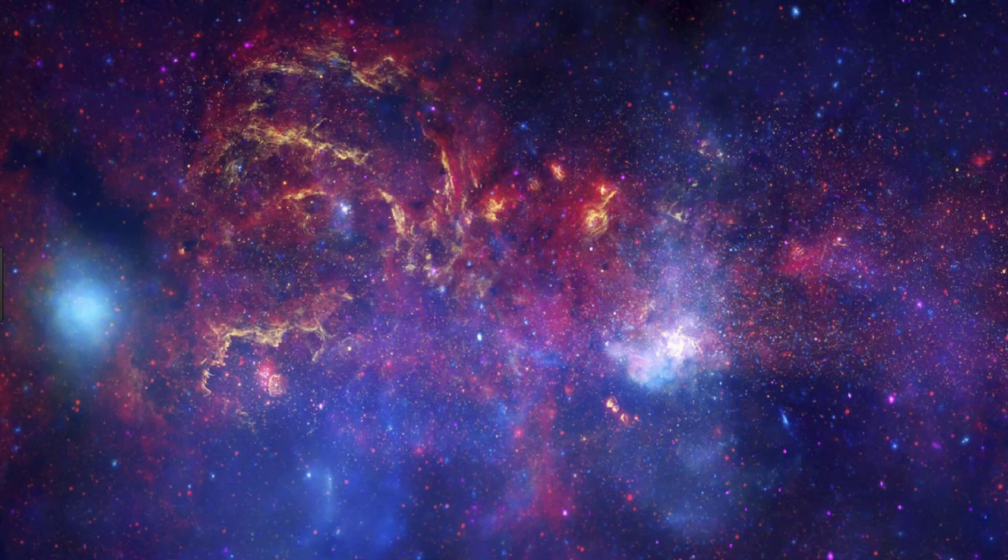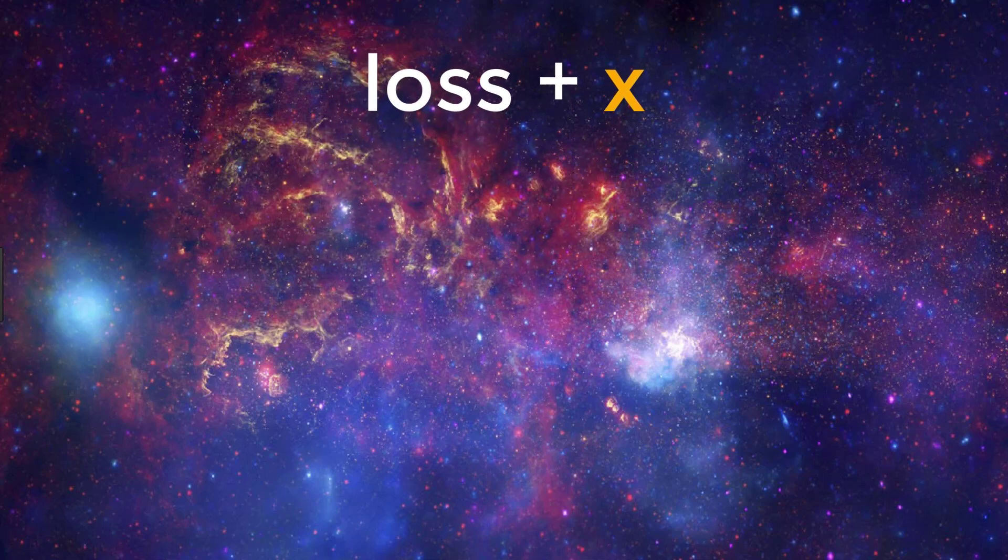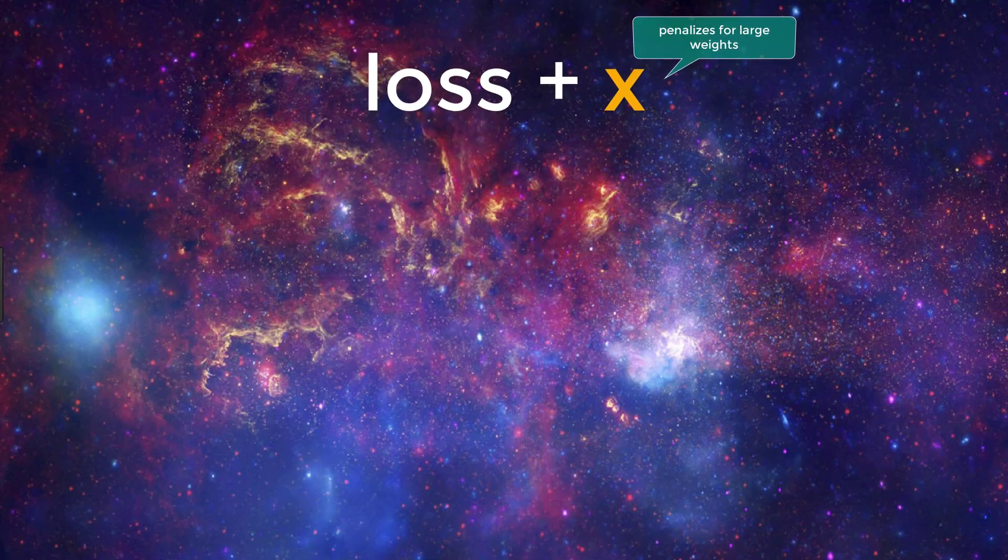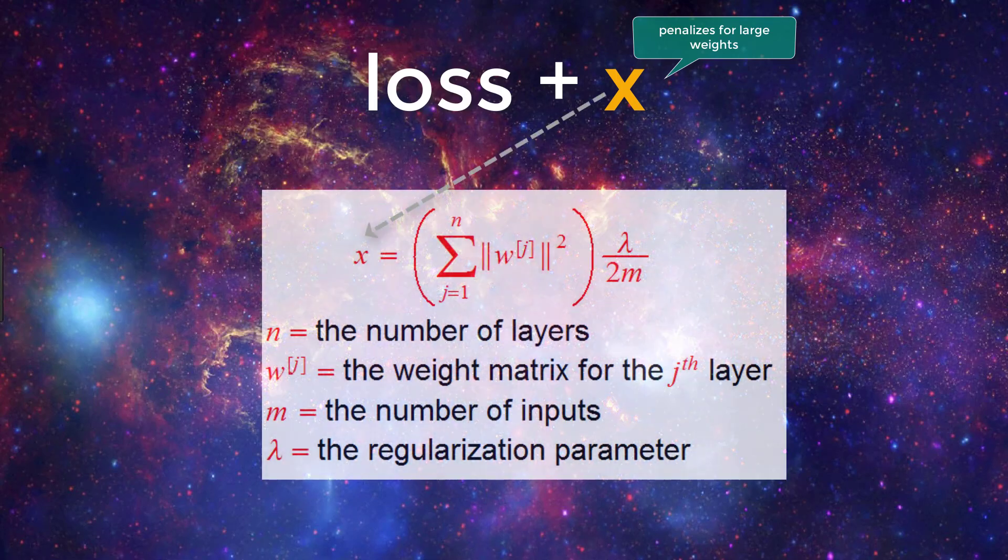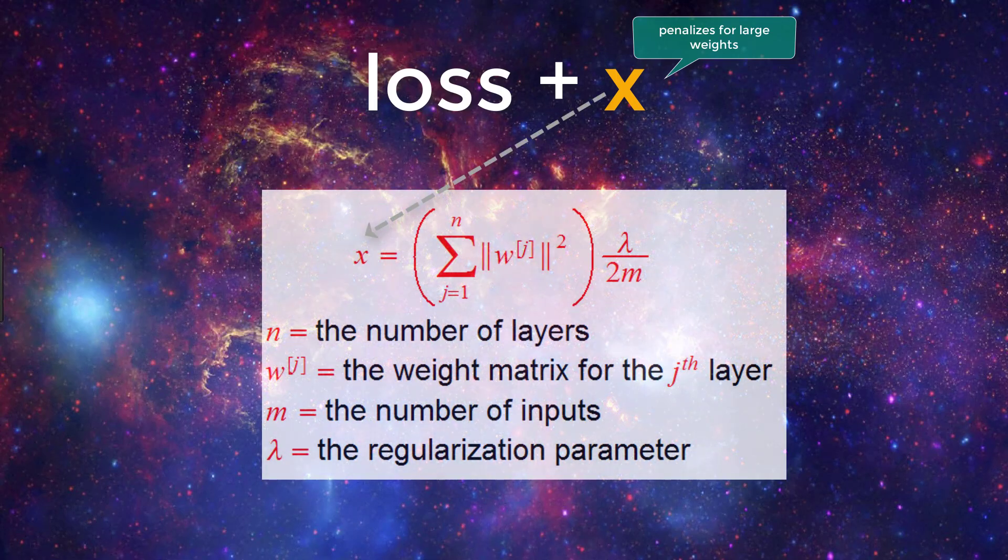The most common regularization technique is called L2 regularization. Now, we just said that regularization basically involves adding a term to our loss function that penalizes for large weights. With L2 regularization, the term that we're adding to the loss is the sum of the squared norms of the weight matrices multiplied by a small constant.